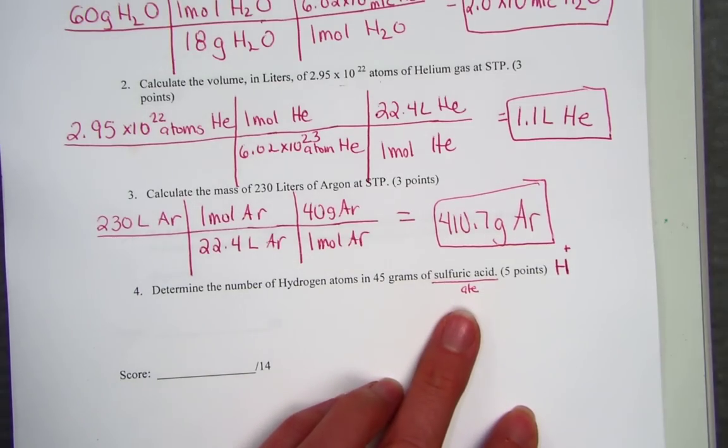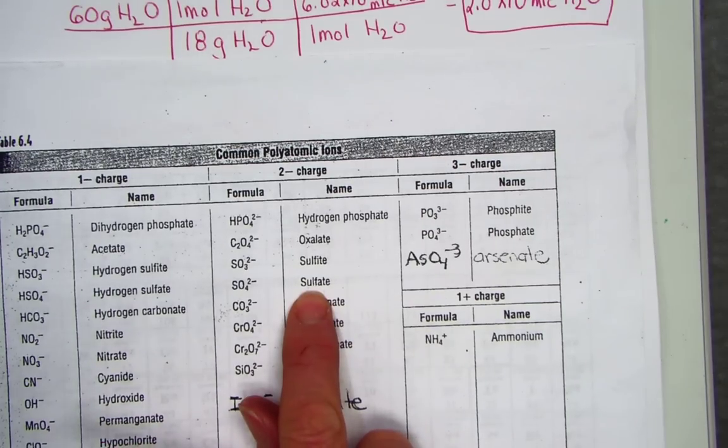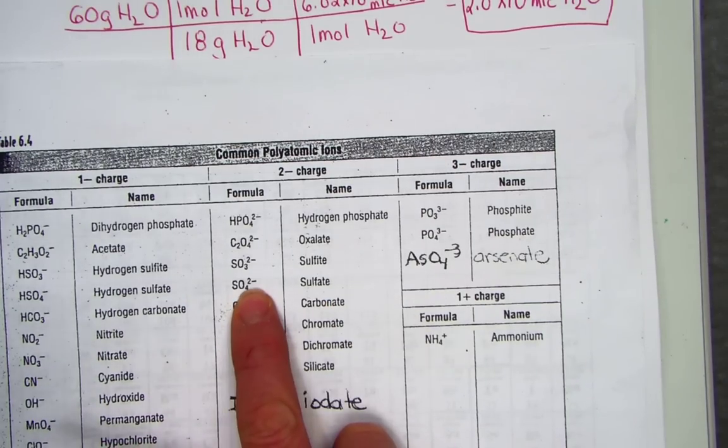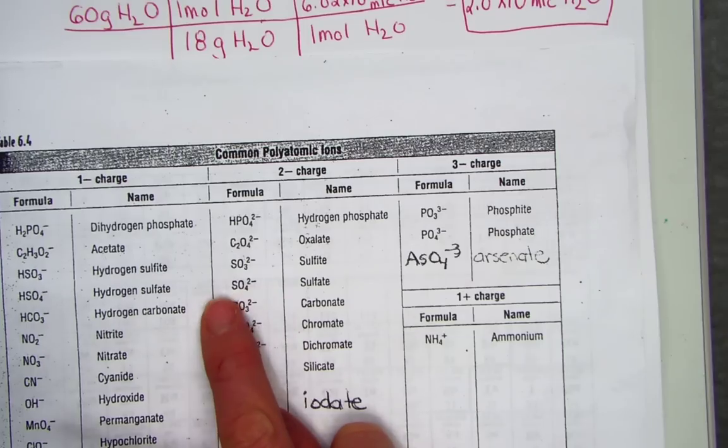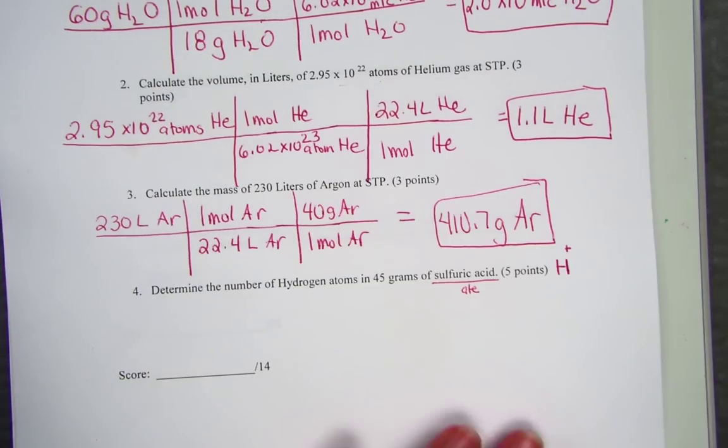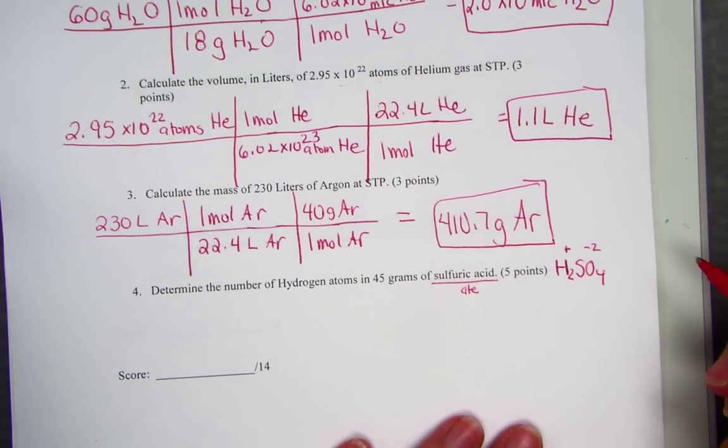To write our formula for sulfuric acid, we find a polyatomic ion called sulfate. It's SO4 carrying a minus two charge. Starting with hydrogen and considering charges, the polyatomic ion sulfate, when I crisscross, we get H2SO4.